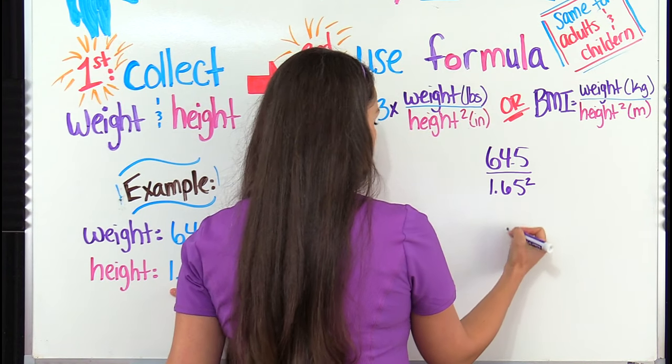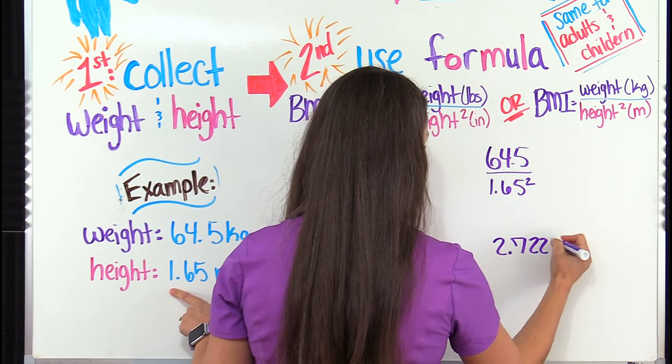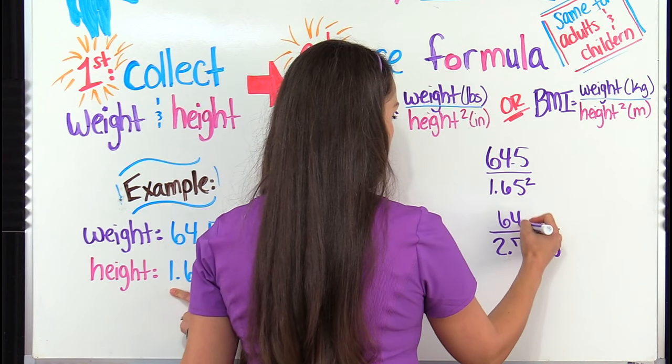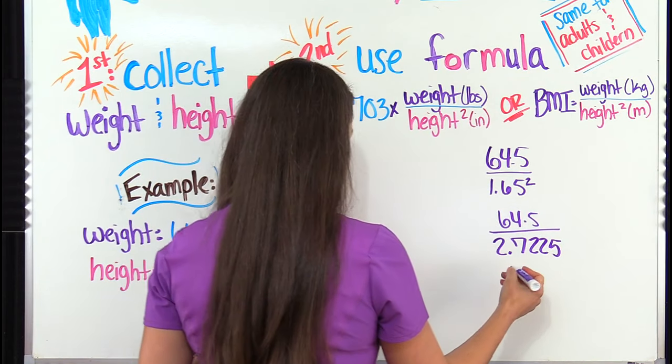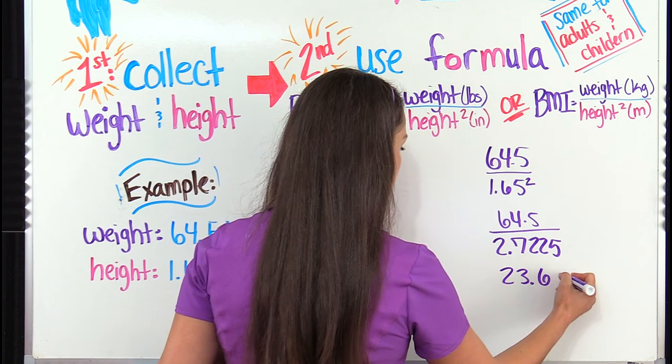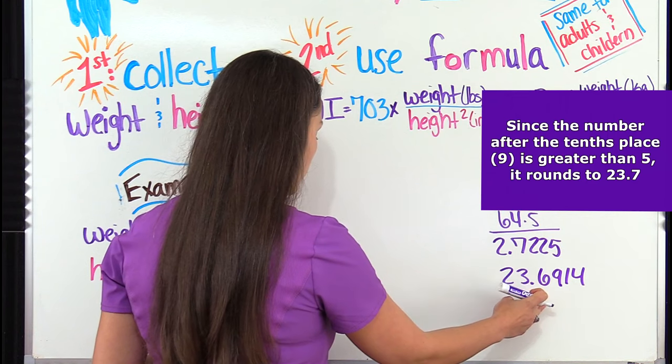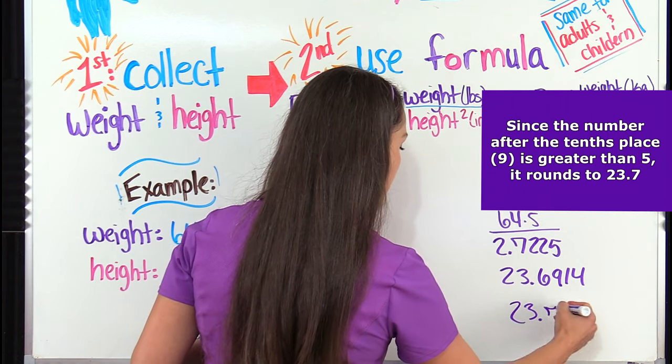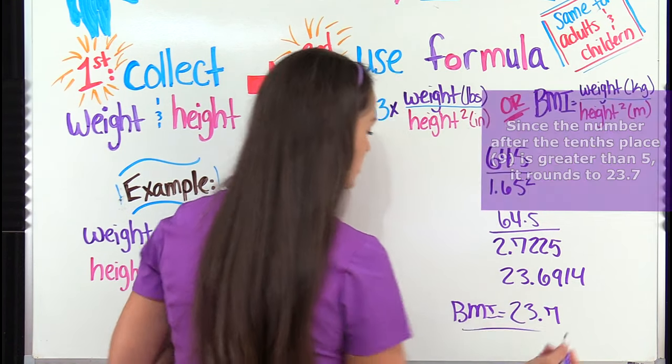So 1.65 squared gives us 2.7225. And we're going to bring down our 64.5 and we're going to just divide that out. So whenever we divide that out we're going to get 23.6914. And we're going to round to our nearest tenth that first decimal point. And that's going to give us 23.7 as the BMI of our patient.